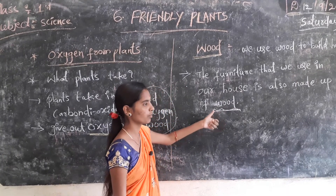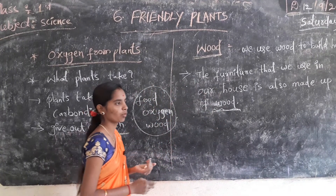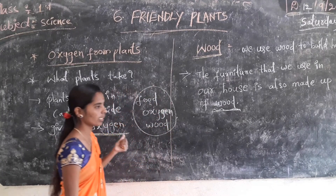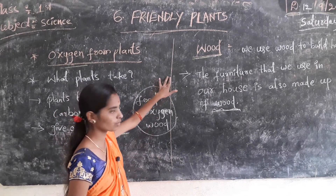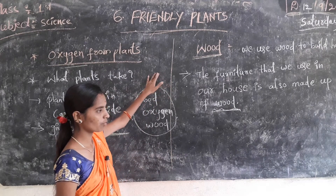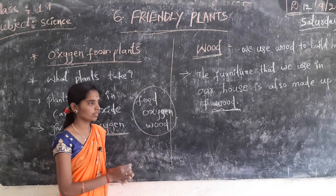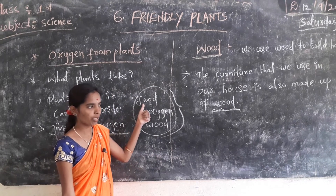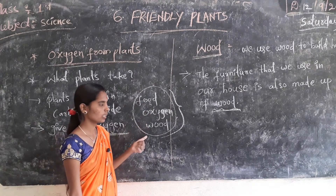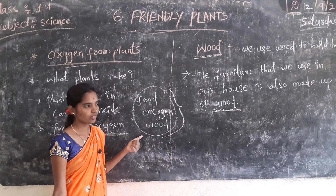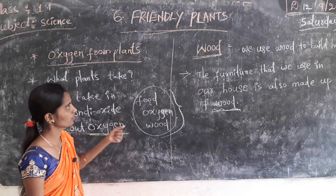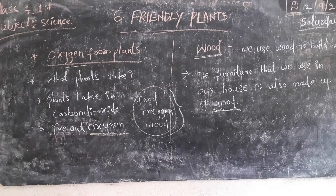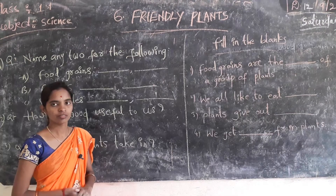We get wood from plants. We get mostly food, oxygen, and wood from plants. In this lesson we discussed about these three main things: food from plants, oxygen from plants, and wood from plants. This is our sixth lesson — Friendly Plants.